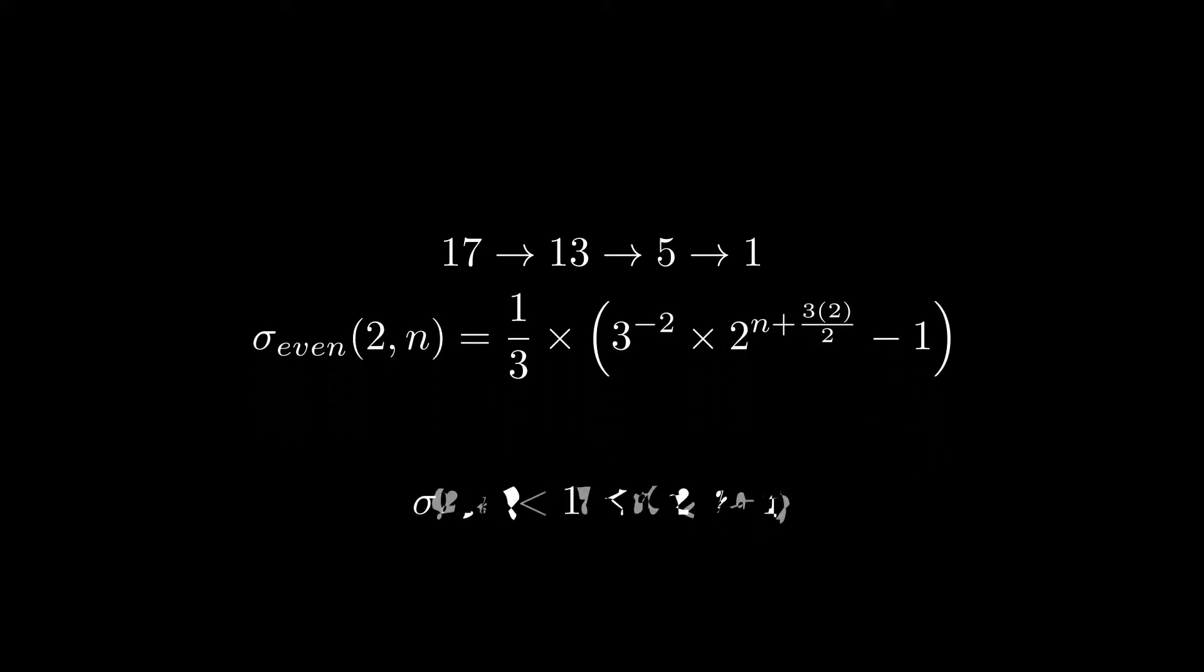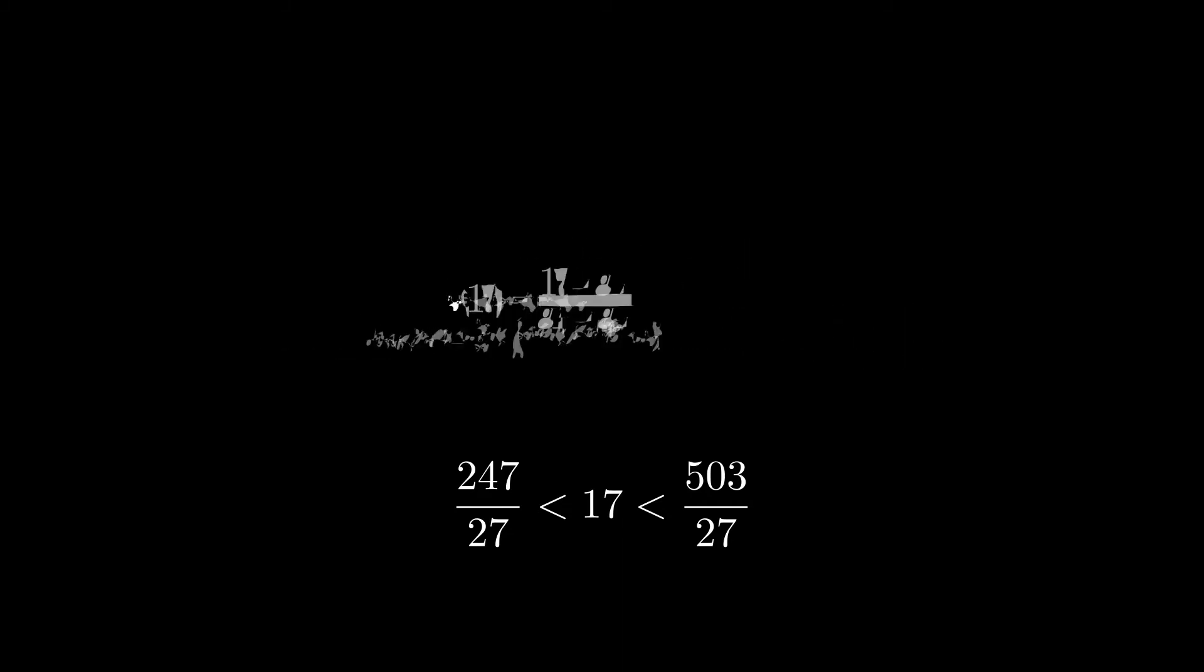These are just sigma values that are immediately to the left and immediately to the right of the number that we're interested in for integer values of n. That'll make a little more sense in a second when I show it visually. But in this case, it comes out to be these two different fractions. So then I plug them into the equation for kappa, and I simplify, and I end up getting a fraction of 53 over 64 for 17.